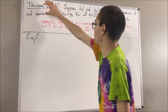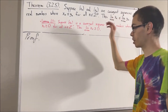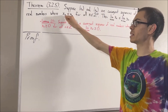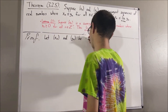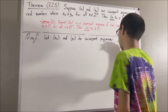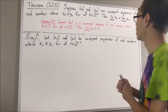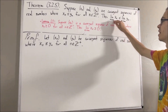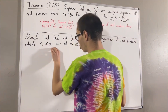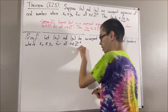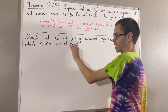Okay, so now let's get into proving this theorem. To start out the proof, let's give ourselves two convergent sequences of real numbers, xn and yn, where xn is less than or equal to yn for all positive integers n. Our whole goal from here is to show that the limit of xn is less than or equal to the limit of yn. Now, since xn is less than or equal to yn for all positive integers n, this implies that yn minus xn is greater than or equal to zero for all positive integers n.